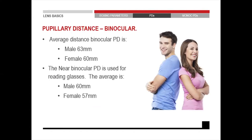If we look at binocular PD, the average distance PD for a male is 63 millimeters and for a female is 60. Obviously, it also depends on what country you are from, as some people's faces are formed differently — whether you're Asian or Western. This is just a rule of thumb. For near PDs, it's about three millimeters smaller than the distance PD. So if someone says their PD is 85 millimeters, that's not possible — it helps to know what is normal and what is not.